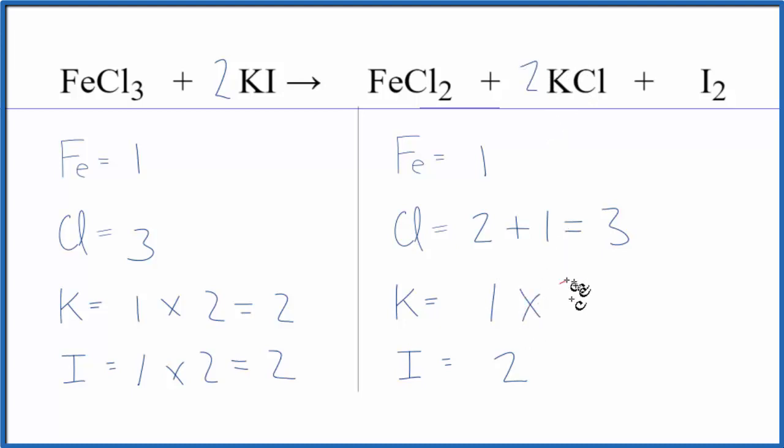One times two, two of those, and then the chlorine, we need to update that. So for the chlorine now we have the two plus the two times the one here, that'll give us a total of four chlorine atoms.